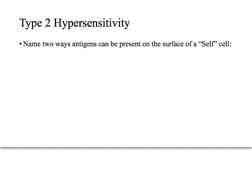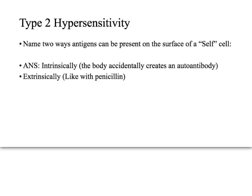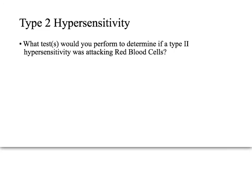Type 2 hypersensitivity quiz: Name two ways antigens can be present on the surface of a self cell — for example, how can an antigen be on the surface of a red blood cell? The answer is intrinsically — the body accidentally creates an antibody against a normal component — or extrinsically, like penicillin attaching to the cell. What test would you perform to determine if type 2 hypersensitivity was attacking red blood cells? The direct and indirect Coombs test.